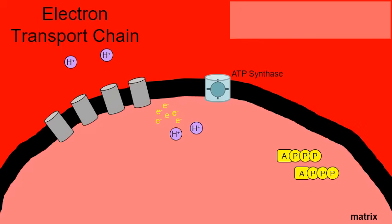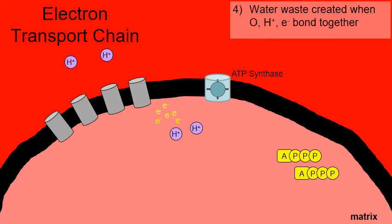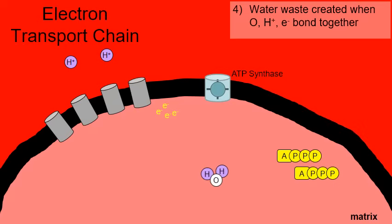As the process winds down, some hydrogens and electrons regather inside the matrix and must be cleaned up to keep the process moving. This is where water is formed. Oxygen from the air we breathe bonds with two hydrogens and two electrons to form a molecule of water. This is where the water in the chemical reaction of cellular respiration comes from — the end of the electron transport chain.